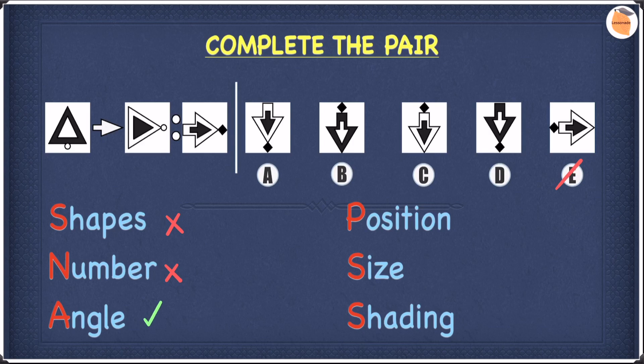Let's move on to position. If you look at the tiny circle, it is towards the back of the triangle, but in the other shape it moves to the front. So this means the diamond at the front must move to the back. We can cross off A because the diamond is at the front, and we can cross off D for the same reason. So we are left with B and C. Let's put a tick next to position.